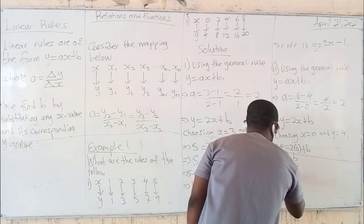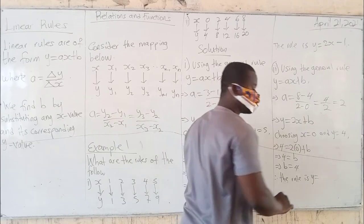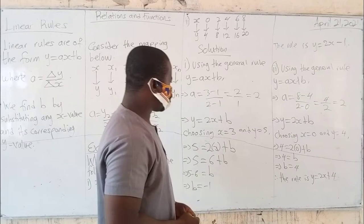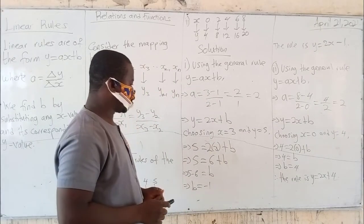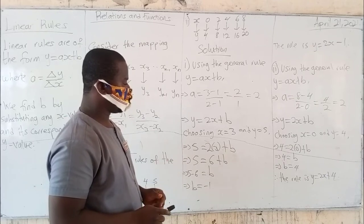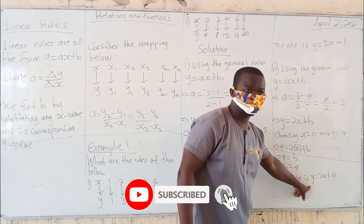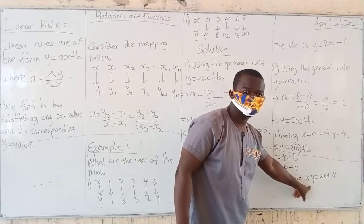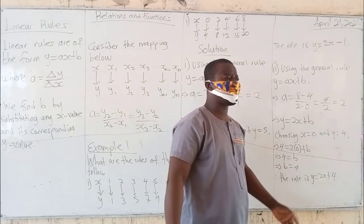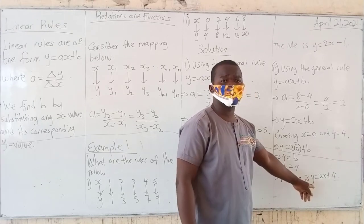So therefore the rule is Y is equal to 2X plus 4. That's a simple linear rule. Be very careful — some friends have the habit of leaving out the Y. If they say the rule is 2X plus 4, that is wrong. You must include the Y.